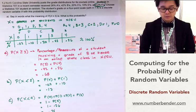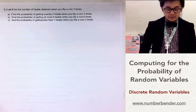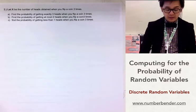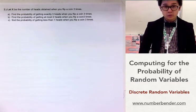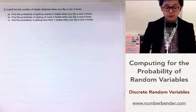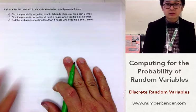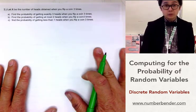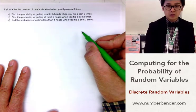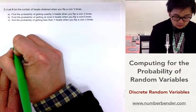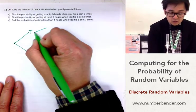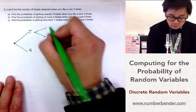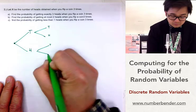In problem number 2, we are given the random variable x, which represents the number of heads obtained when you flip a coin three times. Sometimes in probability questions on random variables, you are given the probability model. Other times you need to produce the distribution from scratch. This is an example where we need to build the probability distribution. We start with a tree diagram showing the first flip — tails or heads — then the second and third flips.